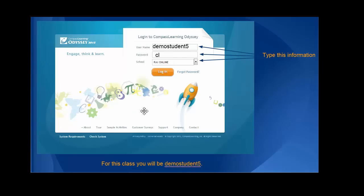So, during this course, you're going to learn a few things about Odyssey by using DEMO Student 5 CL for your password and RAI online for your school. We'll have a whole other training video on how to use Odyssey.